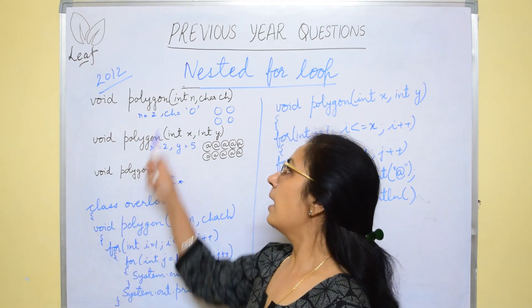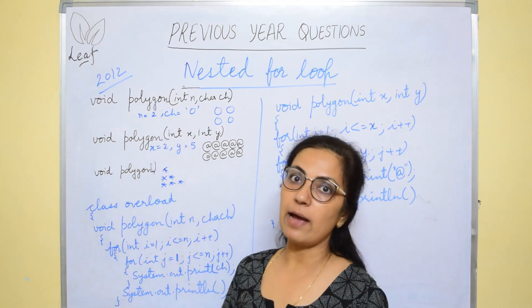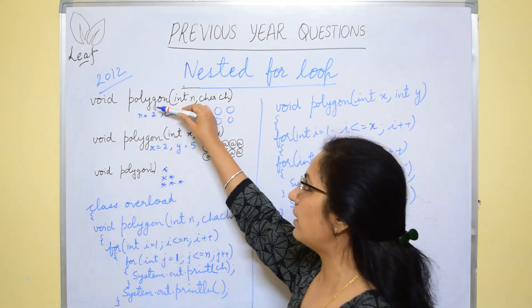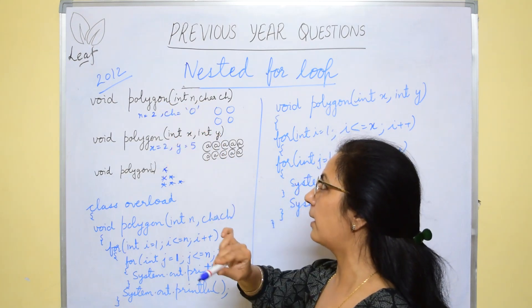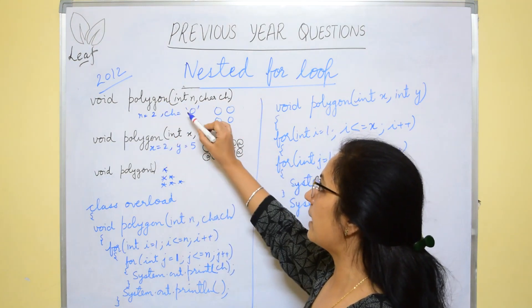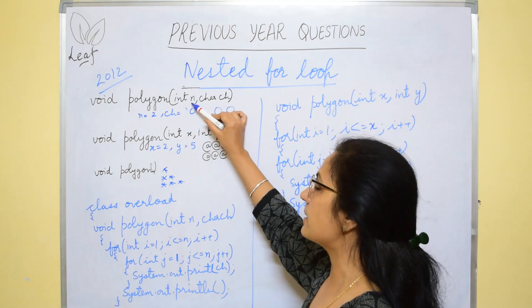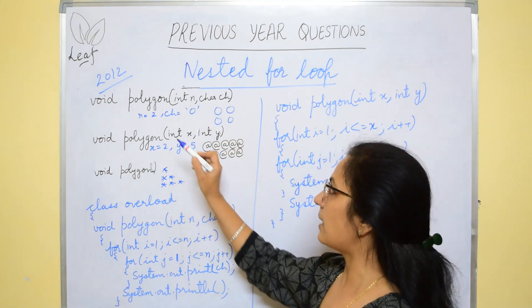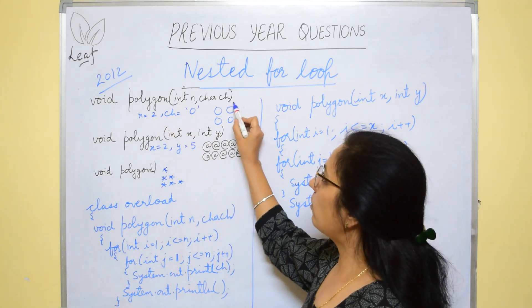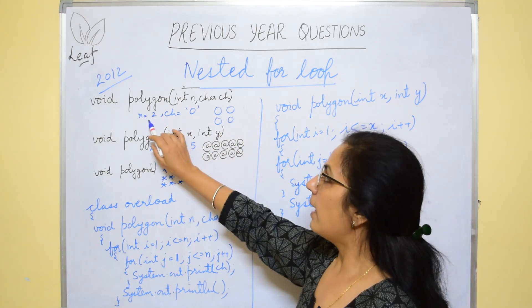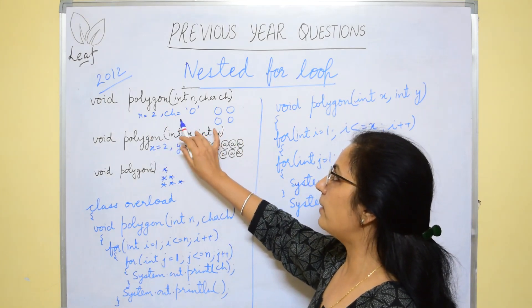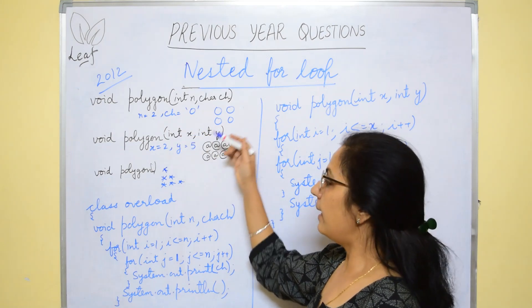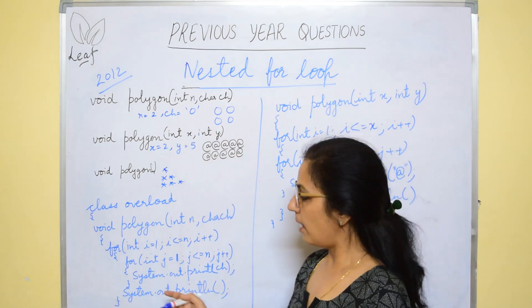Function overloading means in all the functions you should have the same name. Like here it is given in the question polygon, polygon, polygon. The first question says, the first function says that it has two arguments, one int type, one character type and you have to display a square with n number of rows and with ch character.